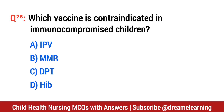Question number 28. Which vaccine is contraindicated in immunocompromised children? The right option is B: MMR.